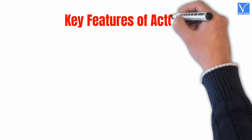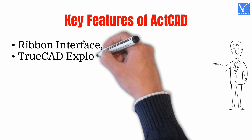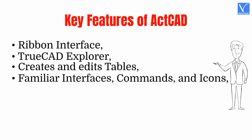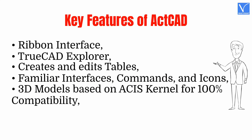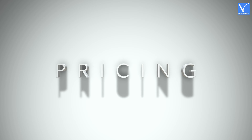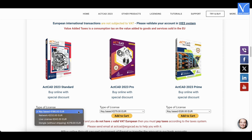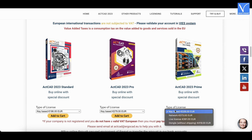Key features of ACTCAD: Ribbon interface; TrueCAD Explorer; creates and edits tables; familiar interfaces, commands, and icons; 3D models based on ACIS kernel for 100% compatibility; XREF overlay; software customization. Pricing: ACTCAD is available in 3 versions — Standard, Pro, and Prime.